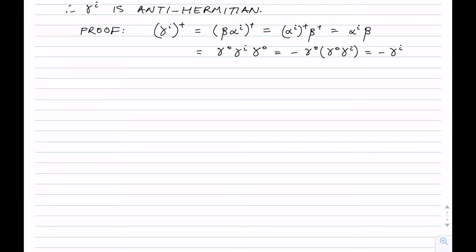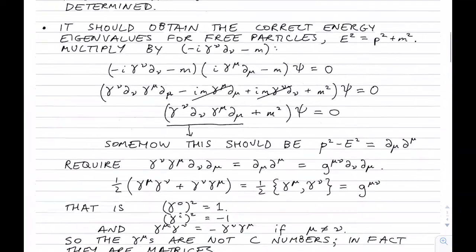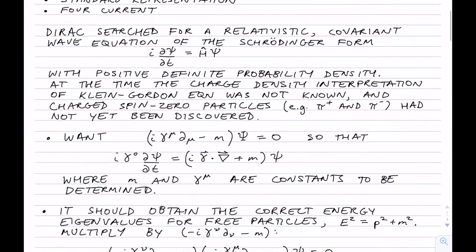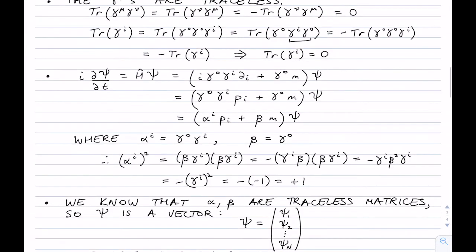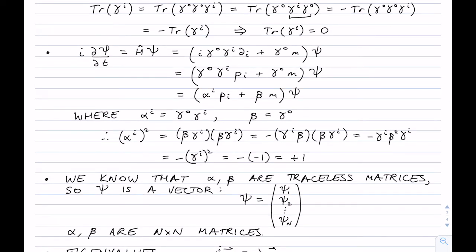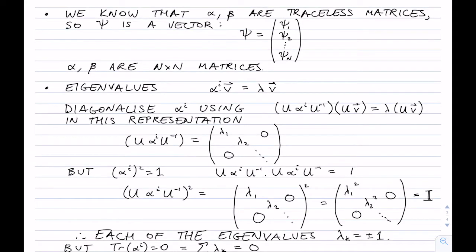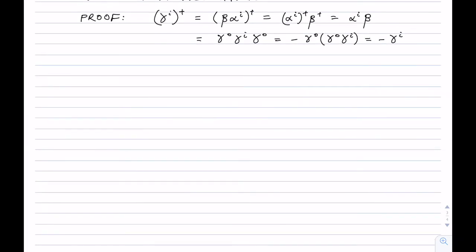That's all the properties we need for the Dirac equation. To recap: we want something manifestly covariant, i gamma^mu d_mu minus m times psi equals zero. All we have to do is find gamma^0 and gamma^i, which gives a Schrödinger-like equation where alpha and beta are Hermitian. We'll explore this further over the next few lessons.